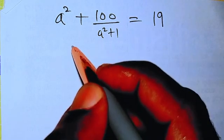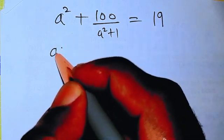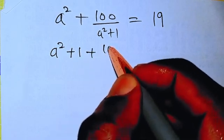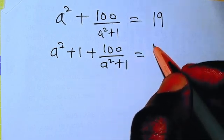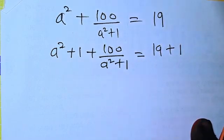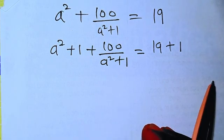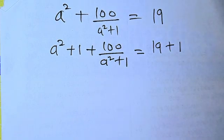I'm going to do something here. If I add 1 to both sides of this equation, I'm going to be having a squared plus 1 plus 100 over a squared plus 1 equals 19 plus 1. You can see I actually did not change anything here. It doesn't destroy this because the equation is balanced. We added 1 to the both sides.